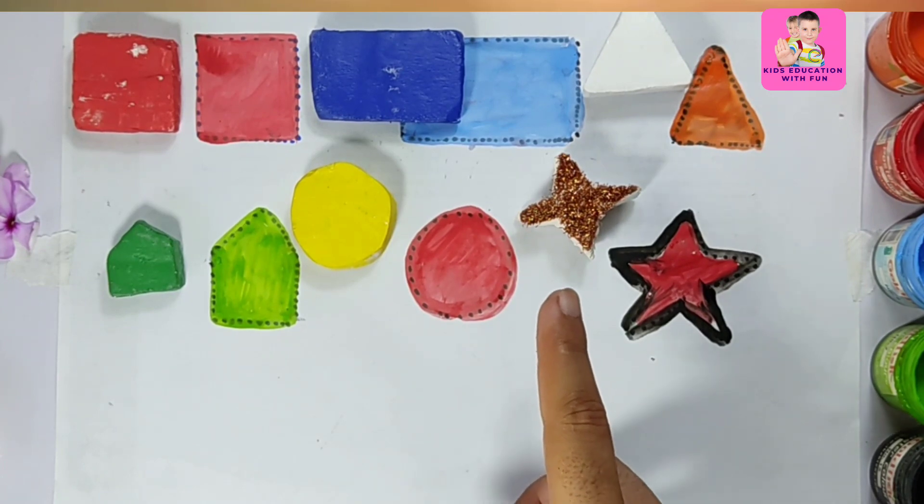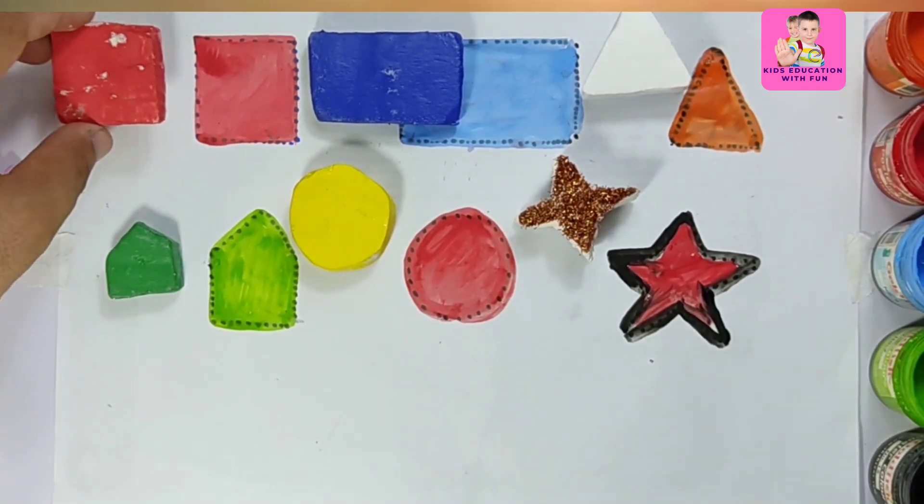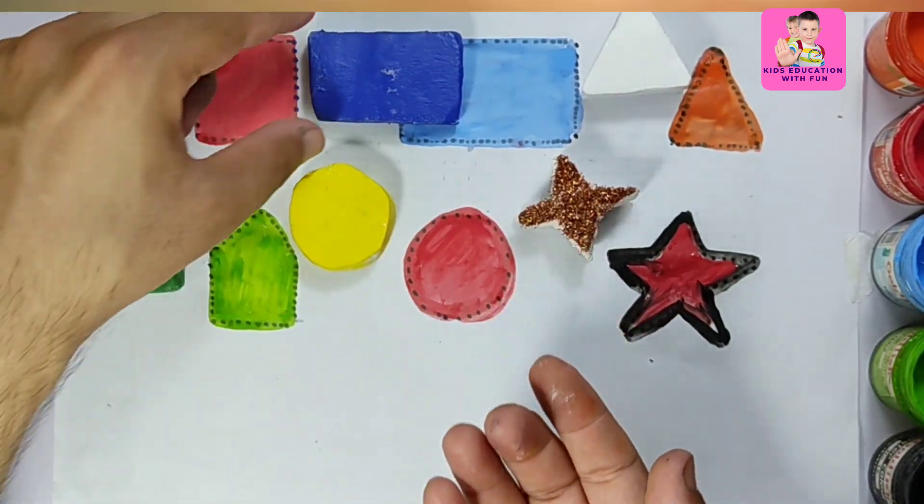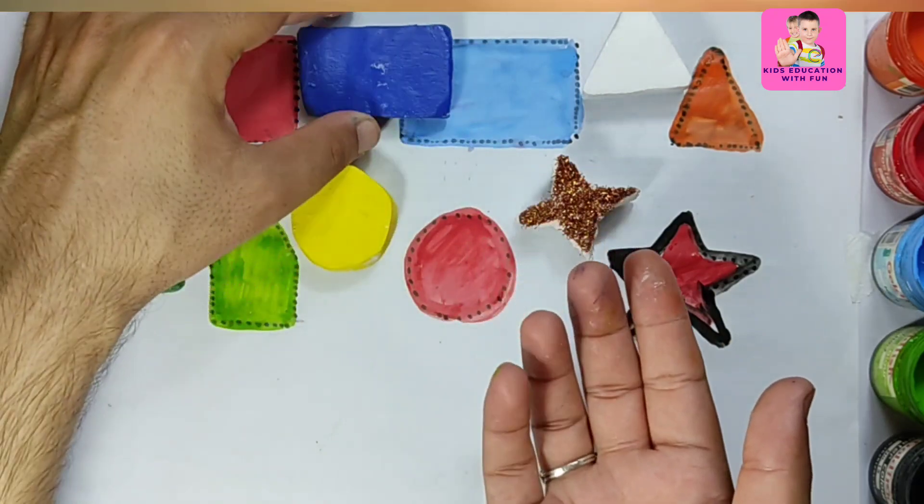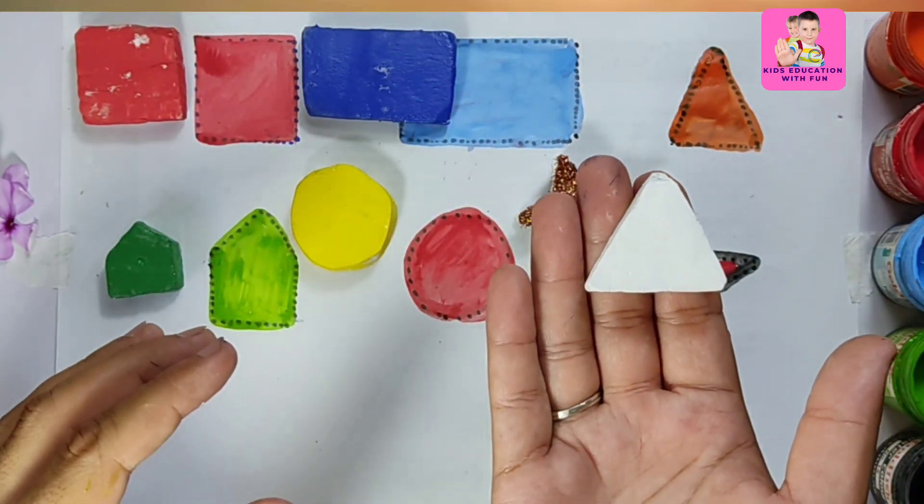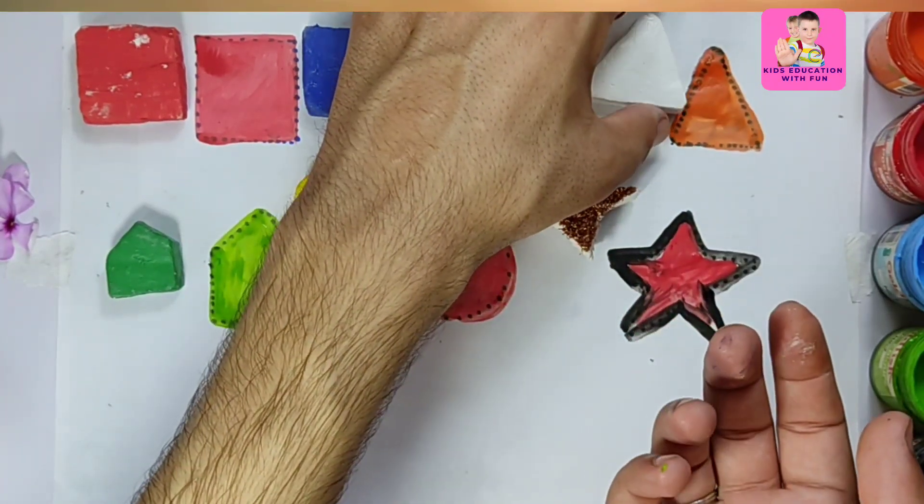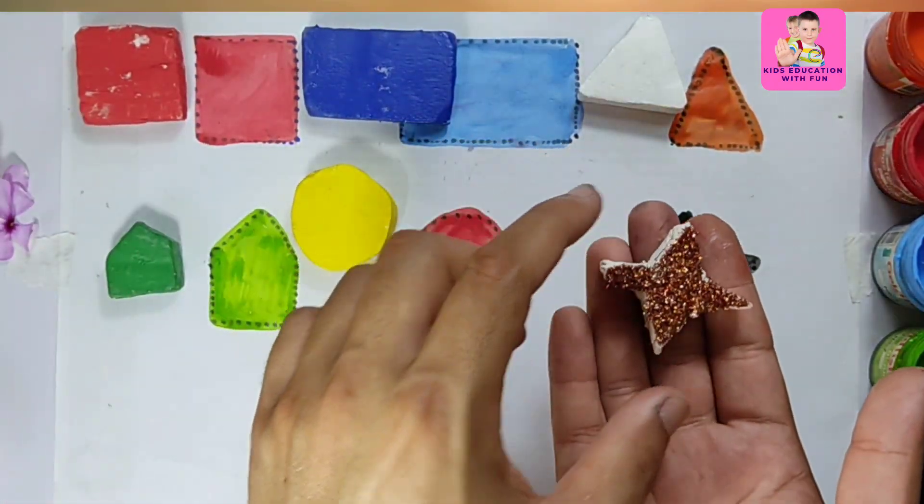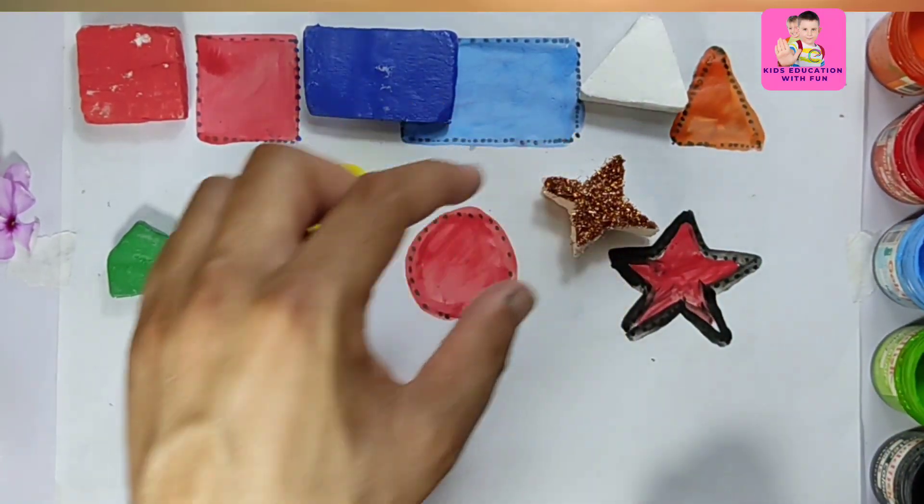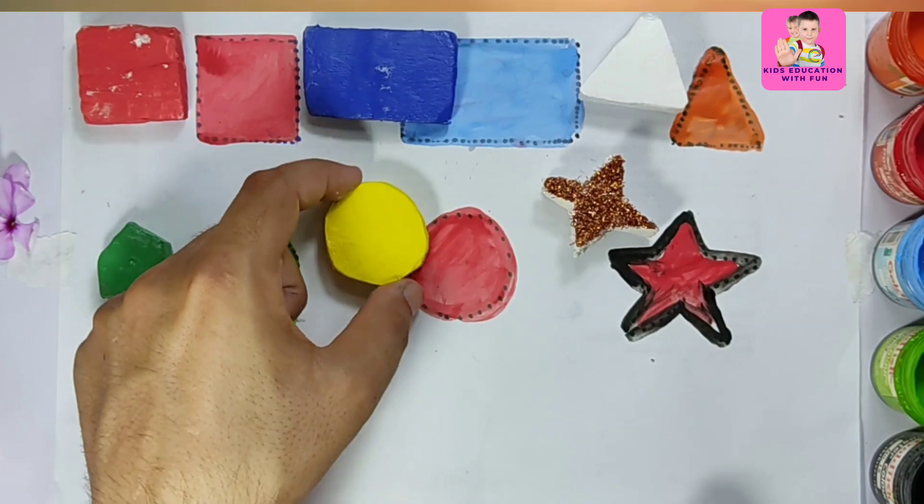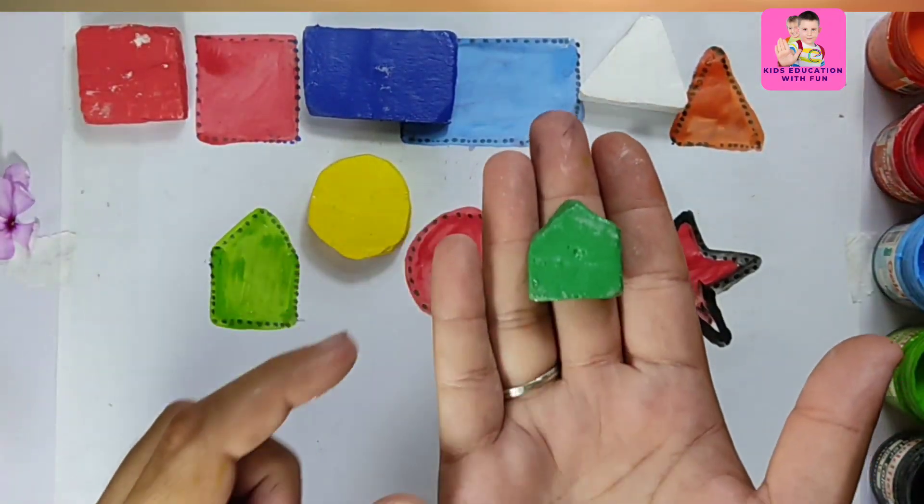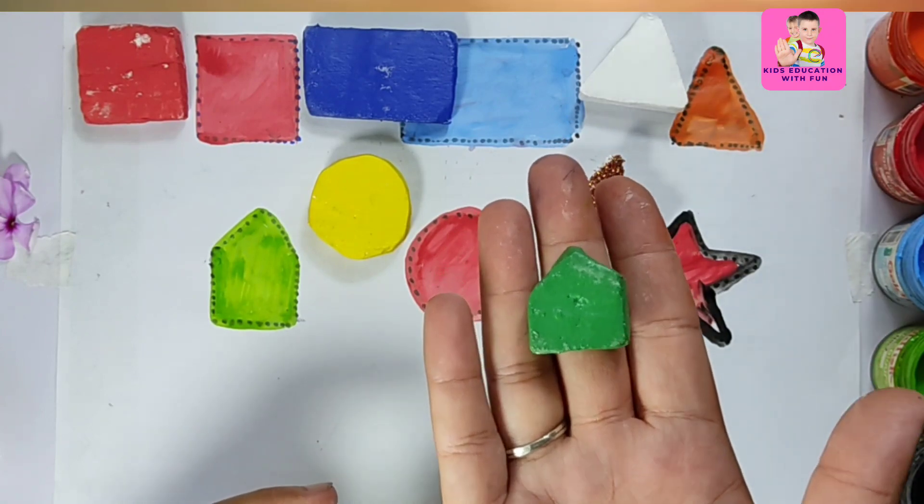Let's talk about the shapes. This is a square, and this is a rectangle. This is a beautiful triangle with three corners. The star has five arms - here it has four, one is missing. This one is a circle, and this is a cute and teeny tiny pentagon.